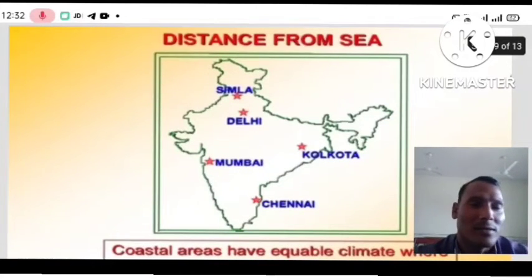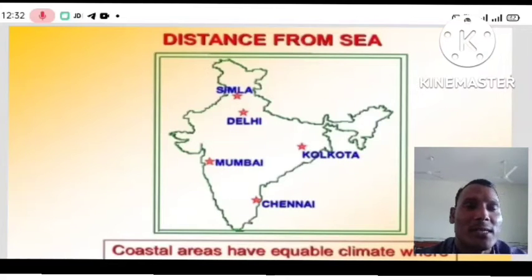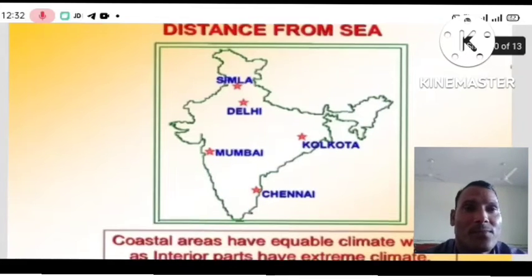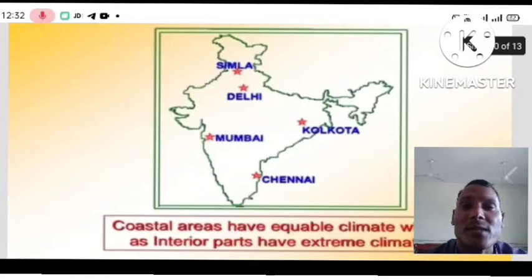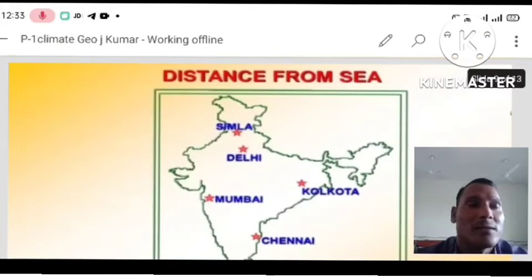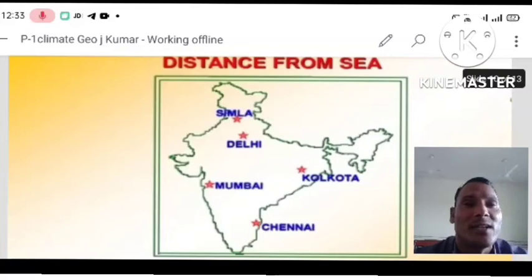Now we will discuss distance from the sea. You can see Shimla, Delhi, Mumbai, Kolkata, and Chennai — these are different cities with different locations. According to their location, there are variations in temperature because their distance from the sea differs. Mumbai, Chennai, and Kolkata are near the coast, whereas Delhi is in the plain area and Shimla is in the hills, so there is a difference in temperature.